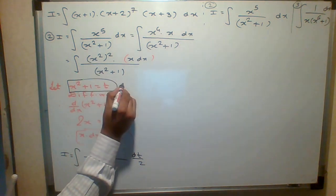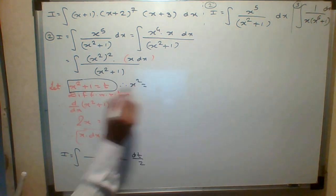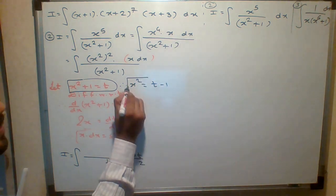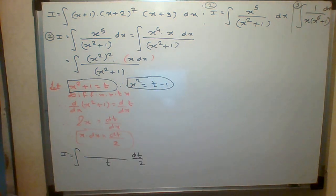X squared, what is x squared? It should be t minus 1. This is what we are thinking.